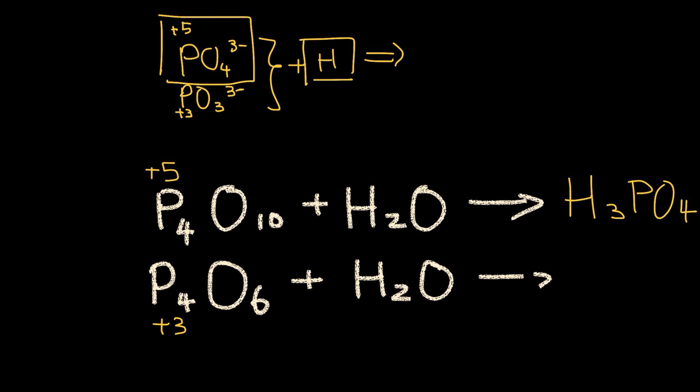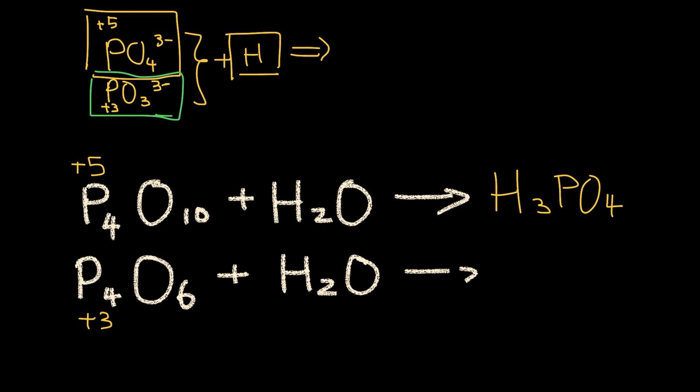Then we see that this oxyanion of phosphorus has a positive 3 charge. So then we would add our phosphite plus our hydrogen here to give us this.